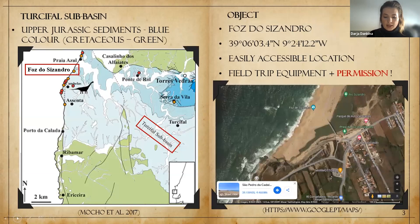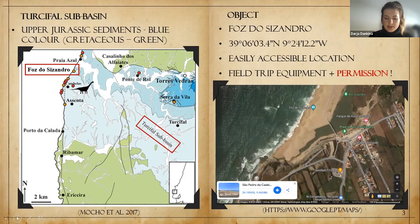On the left you can see a geological map where the green color shows Cretaceous deposits and different bluish colors represent different formations of upper Jurassic sediments. The study object, Fosduvisandro, is marked in the red rectangle, and geographically it is placed between Praia Azul and Assenta. Geologically this object is part of the Terecehal basin and consists of upper Jurassic sediments.